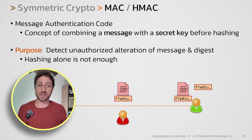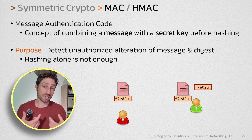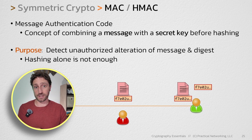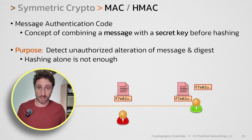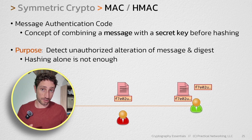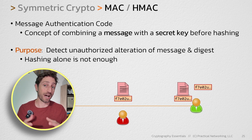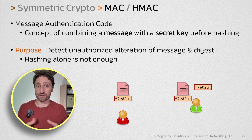Now, some of you might be thinking that's why you also need encryption. And while it's true you do need encryption to send something securely across the wire, technically encryption is solving a different problem. Encryption is solving the problem of confidentiality, whereas here we're trying to solve the problem of integrity. So at the moment, we're not concerned that anyone can read the message, but we are concerned that we can detect if the message was changed in transit.